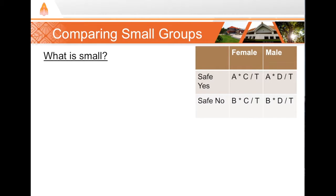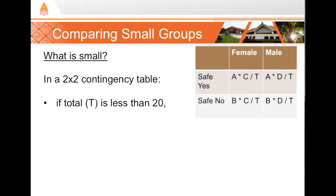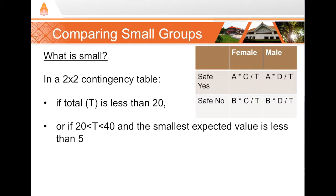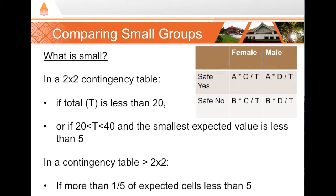What if our sample size is small? For a 2x2 contingency table, it's considered small if the total number of participants is less than 20, or if the total is between 20 and 40 and any single expected cell value is less than 5. For tables larger than 2x2, it's small if more than one-fifth of expected cells are less than 5. For example, in a 2x3 table with six cells, one cell can be less than 5, but not two — that would exceed 20% of cells.